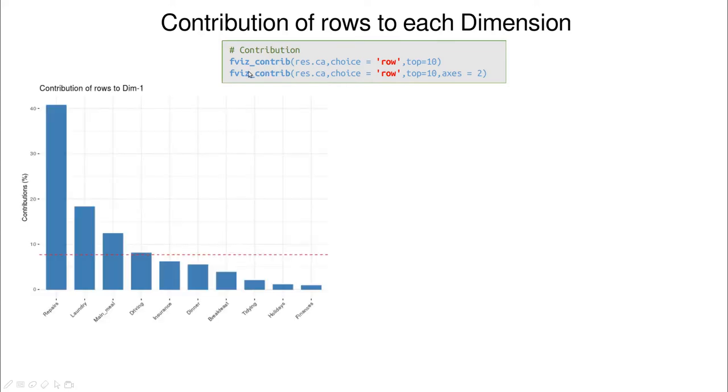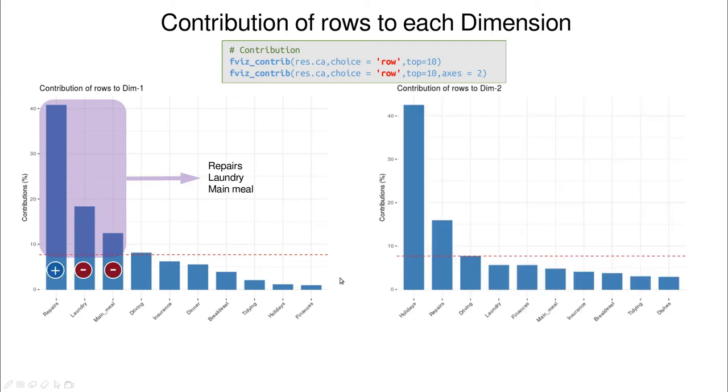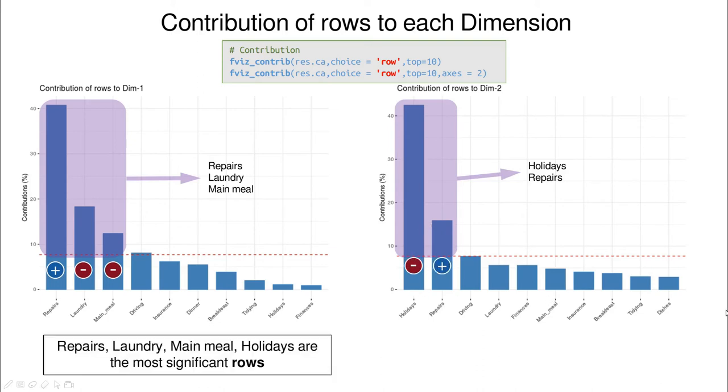We have different tools to explore the contribution of each row to each dimension. And we have this contribution function. And you can see again that the largest bars, the bars that are well above this horizontal line, are repairs and laundry followed by main meal. But we can neglect the effect of those variables. And you can see that going back to our correlation diagram, that this is positively correlated and these two are negatively correlated. So essentially, these are shape factors. What about the second dimension? Here you can see that clearly holidays is the most relevant followed by repairs. And this is a shape factor because we have different signs for different columns.